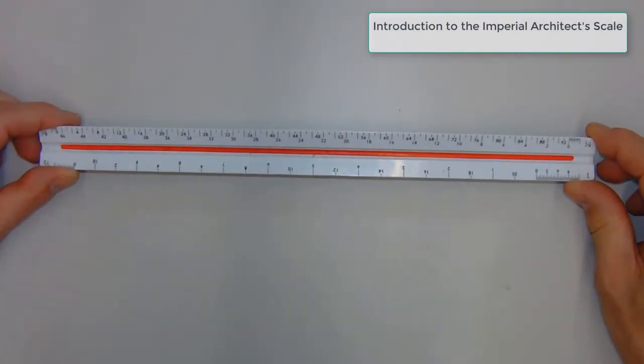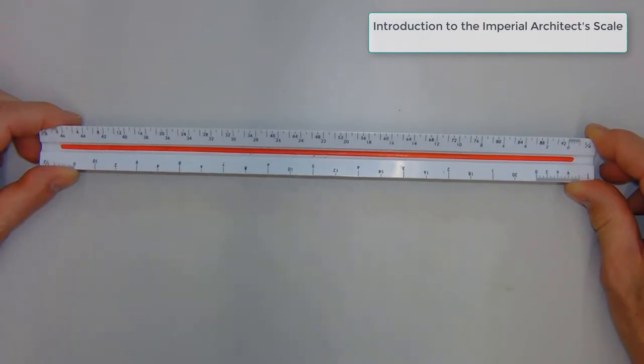Okay, here we have the architect scale. This is imperial units. This is the most common scale for architectural drawings and this is the scale that we'll be using throughout the course of the program.